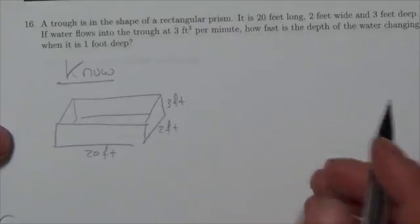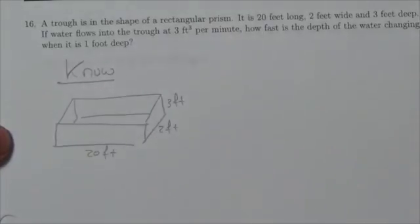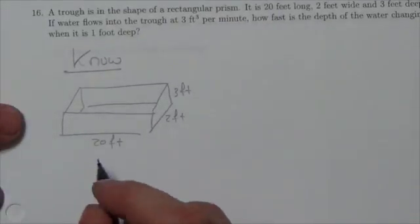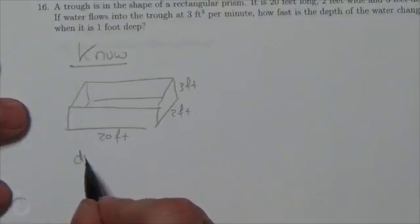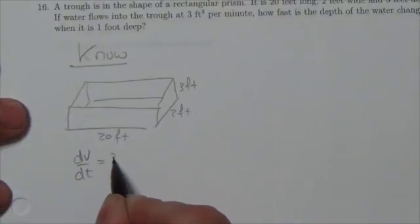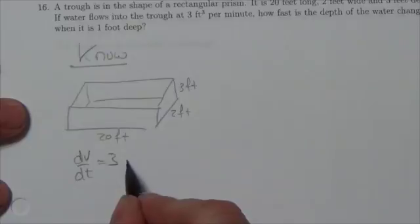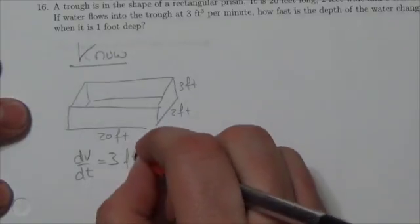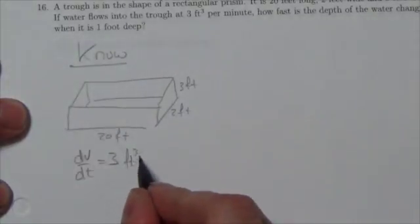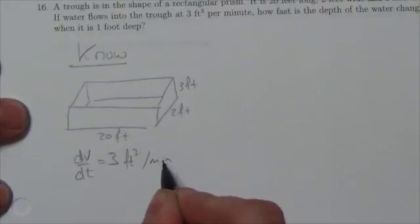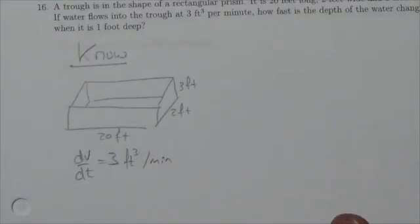We know that water is flowing into the trough at 3 feet cubed per minute. Now, that's a volume change here. So dV/dt is 3, and it's positive feet cubed per minute. It's positive because it's increasing.